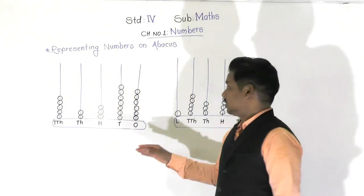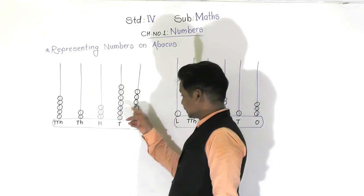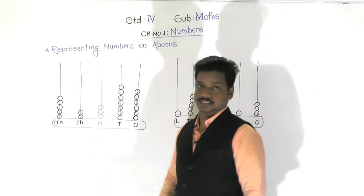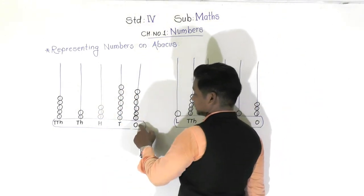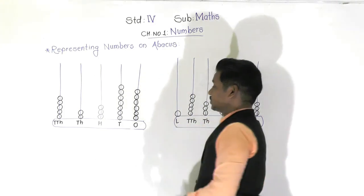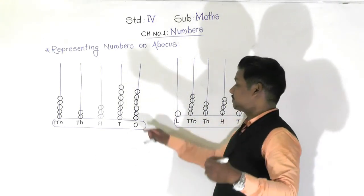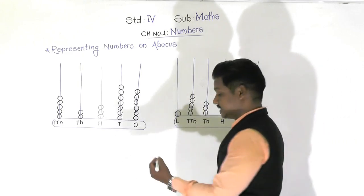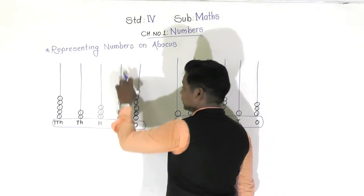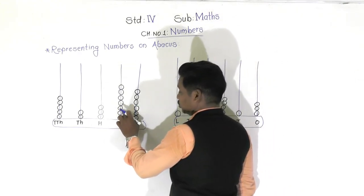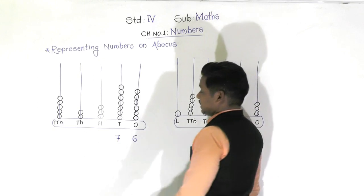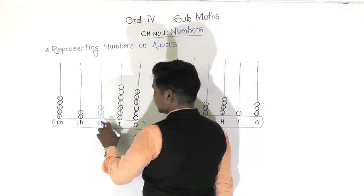You can see the beads inside it - I have drawn these beads, and these beads represent the digits. For example, see this spike of ones: there are one, two, three, four, five, six beads. So the digit at ones place is six. Then in the spike of tens place, how many beads are there? One, two, three, four, five, six, and seven - so it represents the digit seven.